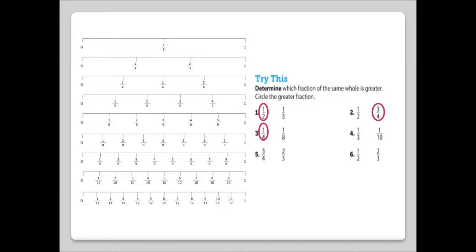Number 4: 1 third or 1 tenth. 1 third is a greater fraction. Number 5: 3 fourths or 2 thirds. 3 fourths is a greater fraction. Number 6: 1 half or 2 thirds. 2 thirds is a greater fraction.